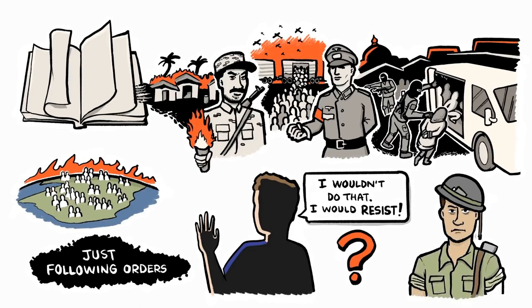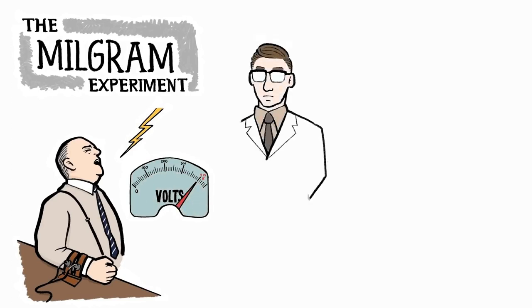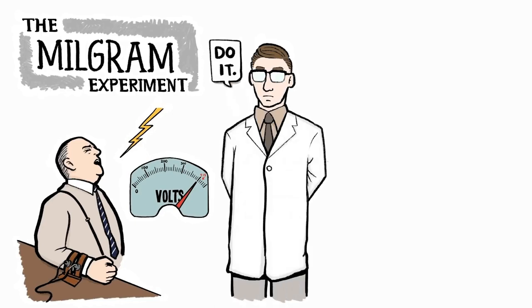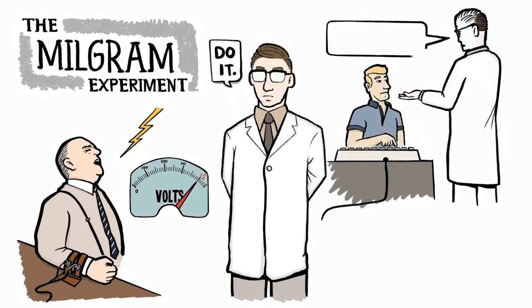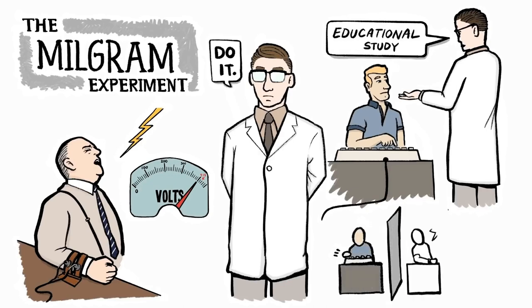In a famous study of obedience known as the Milgram experiment, ordinary people were willing to inflict even extreme harm on another human being, administering what they thought were electric shocks of increasing severity, simply because they were told to do so by someone projecting a symbol of authority, a researcher wearing a lab coat. In the experiment, the subjects were told they were participating in an educational study, and that they were to administer the shocks to a fellow participant each time an incorrect answer was given on a memory test.